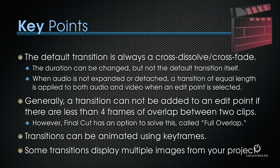The default transition is always a cross-dissolve, cross-fade. The duration can be changed, but not the default transition itself. When audio is not expanded or detached, a transition of equal length is applied to both audio and video when an edit point is selected. Generally, a transition can't be added to an edit point if there's less than four frames of overlap — called handles — between two clips. However, Final Cut has an option that solves this called full overlap.